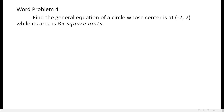Word problem number 4: Find the general equation of a circle whose center is at negative 2, 7 while its area is 8 pi square units. The same way, you are to find the general equation. In the previous example we had the circumference, but this time we are given the area of the circle. You have to recall the standard form of equation, and we still need h, k, and r.